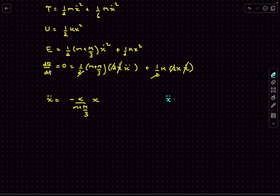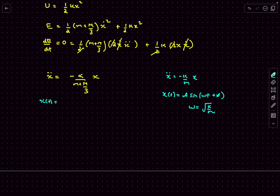We can consider this case as having an additional effective mass of M/3 placed on top of our block, both oscillating together. The displacement as a function of time comes out to be A₀·sin(ωt + φ), where for the normal case ω = √(k/m), but here ω = √(k/(m + M/3)).